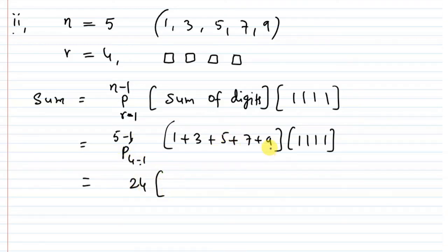24 times 25 into 1111 equals 666000. This is the answer.